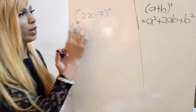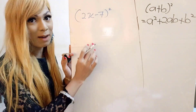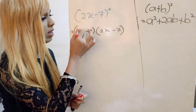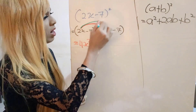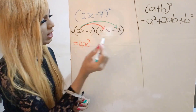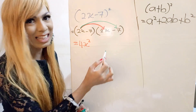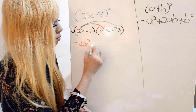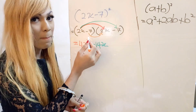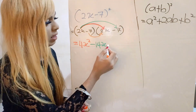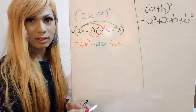For the first question, we have (2x minus 7) squared. We expand it into two brackets: (2x minus 7) multiplied by (2x minus 7). So 2x multiplied by 2x gives 4x squared. Then 2x multiplied by negative 7 gives negative 14x.